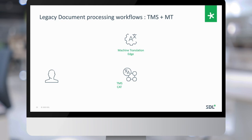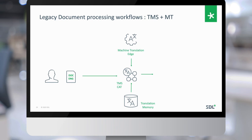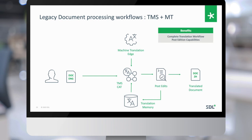On the other side, in a legacy document processing workflow with a Translation Management System, the user uploads the document to the TMS or CAT tool, gets it pre-processed, and within that system it leverages translation memory. Anything without a translation memory match gets sent out for machine translation output. The user then receives a document within that interface where they can post-edit and save back to translation memory — a complete translation workflow with post-editing capabilities.